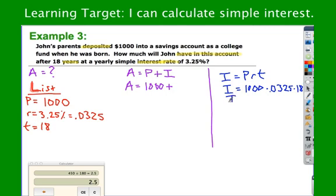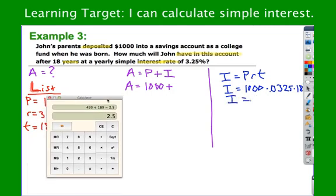So for interest, I can calculate that by doing principal times rate times time. So 1,000 times 0.0325 times 18. So first thing I'll do is I'll do 1,000 times 0.0325. That'll be $32.50. That's how much money they make in one year. And then for 18, they're going to make that for 18 years. So they make $585 in that little savings account there.